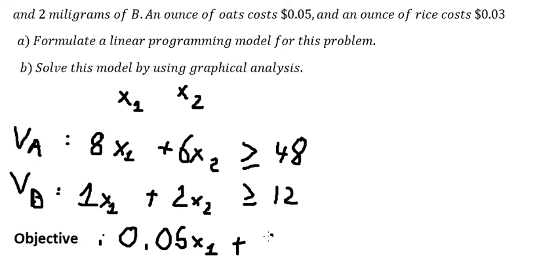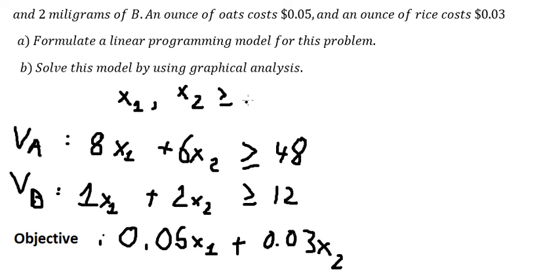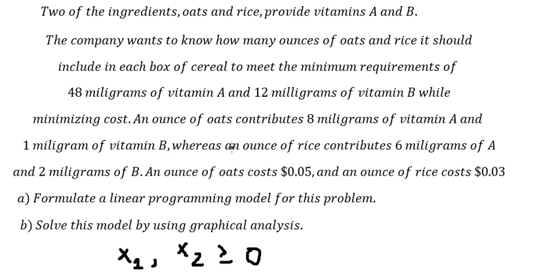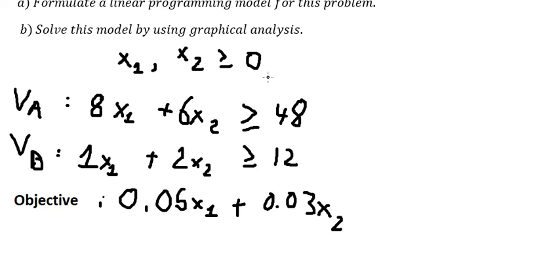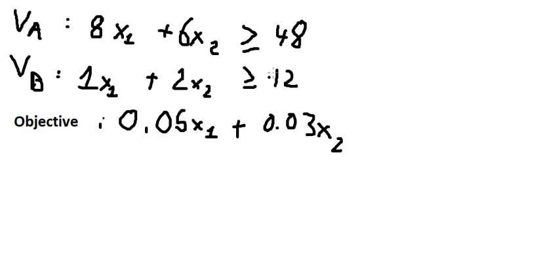And 0.05*s2. We know that s1 and s2 should be greater than or equal to zero, because these are units and must be positive.